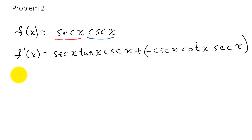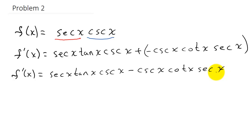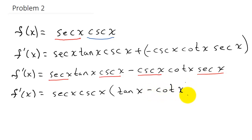So f prime of x equals secant x tangent x times cosecant x, minus cosecant x cotangent x secant x. I notice there's a common factor of secant x and a common factor of cosecant x, so I'll factor that out: f prime of x equals secant x cosecant x times (tangent x minus cotangent x).